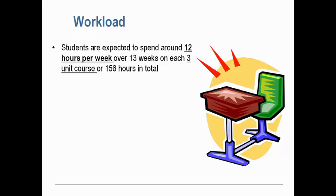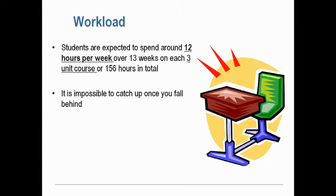In terms of workload, it's expected that you spend on average around 12 hours per week, including both contact time and non-contact time you work on the course on your own. That's about 12 hours per week over 13 weeks on every three-unit course you take. If you were doing four courses, that would be roughly 156 hours in total — it's considered to be kind of a full-time job.